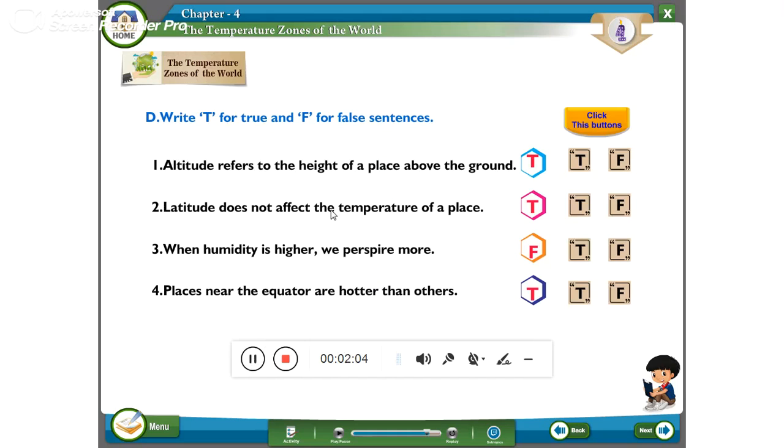Next one, write T for true and F for false sentences. Altitude refers to the height of a place above the ground. So it is true. You can write true.